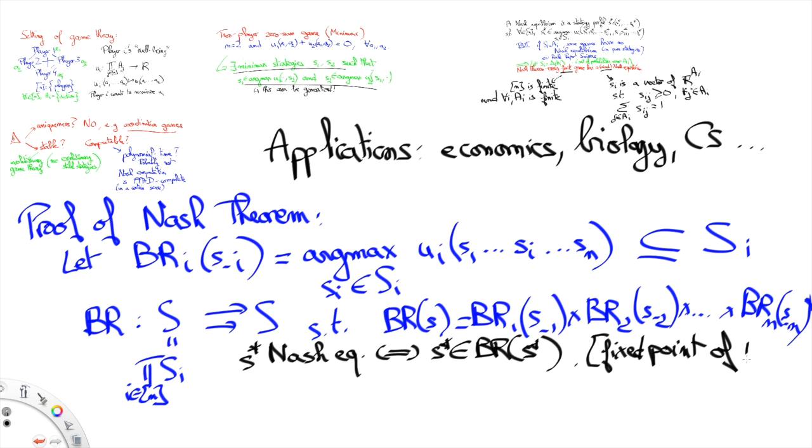Indeed, once this strategy profile gets played no player has incentive to deviate from this strategy profile. This strategy profile is thus an equilibrium or as we now call it a Nash equilibrium.